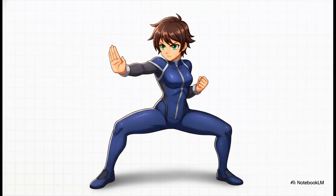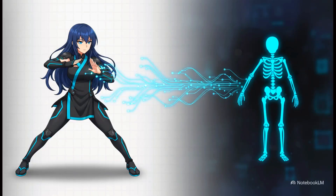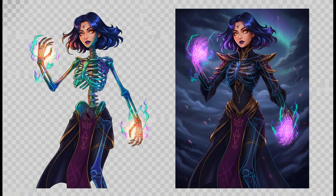ControlNet isn't just for scenes — it is incredibly powerful for characters too. We'll start with a reference photo of a person in a very specific pose. This time we're not getting an edge map. Instead, ControlNet generates what's called a pose skeleton — basically a digital stick figure that extracts the exact position of the arms, the legs, the torso, the head. That becomes the new guide for our character. We prompted for an evil sorceress in a black robe, and the final image perfectly mirrors that reference pose. The arm positions, the way she's leaning — it's all there. This shows you how you can direct your characters with absolute precision.